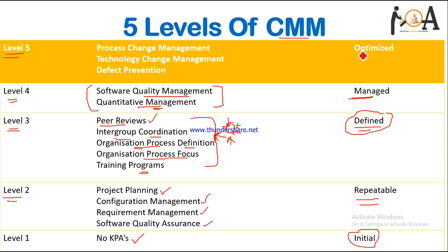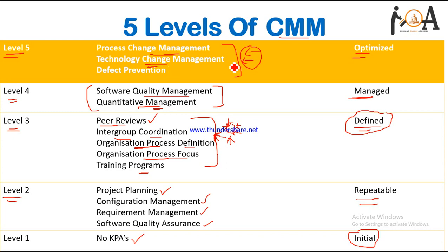The final level is level 5, called Optimized. Several key process areas are there: process change management, where after getting reviews and feedback from users the process is updated; technology change management, where new technologies that emerge are incorporated into the project; and defect prevention, where any defects, errors, or bugs are identified and the team should be capable of solving them. After achieving all five levels of maturity, a software product is considered ready for practical deployment.